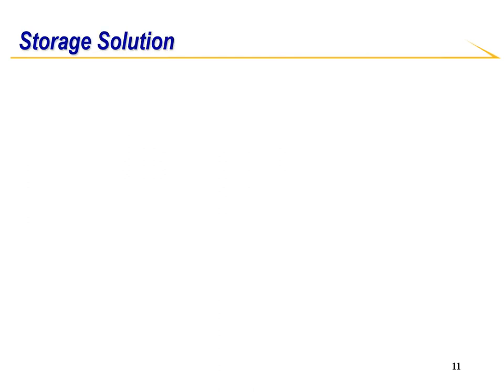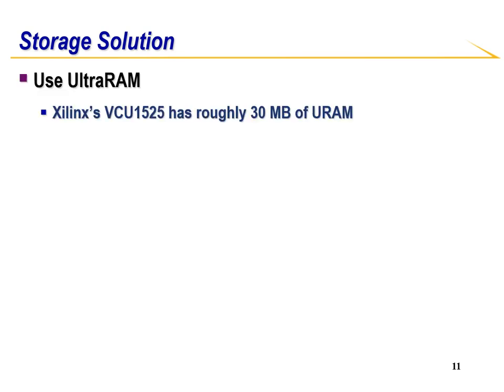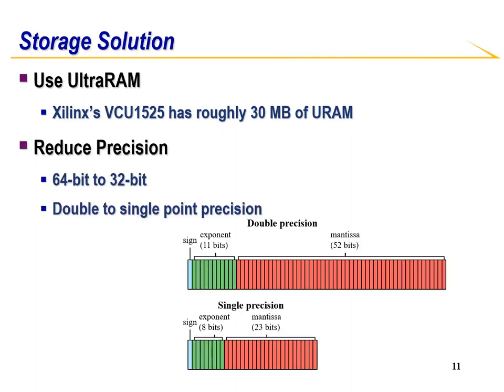With all the challenges listed above, BQSR is still a good candidate for FPGA acceleration. For storage requirements, we can use dedicated large on-chip memory. In this case, Xilinx FPGAs have Ultra RAM. For the VCU1525 chip, there is about 30 MB of URAM. We can also reduce precision for the tables — downgrading 64-bit to 32-bit when counting frequency and using single instead of double precision — therefore reducing table size by two times.